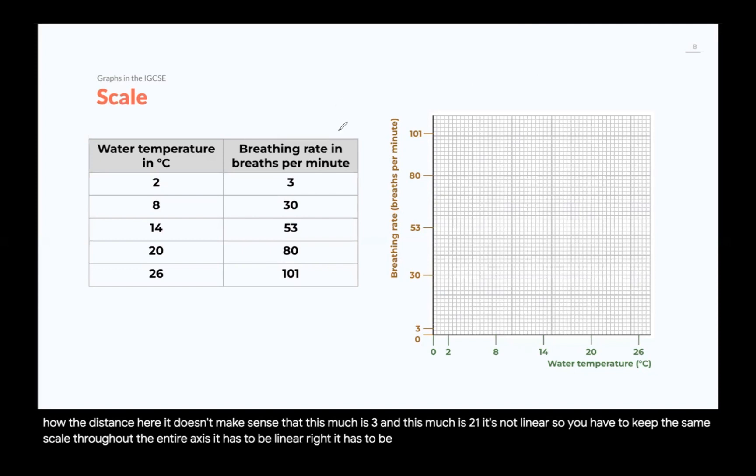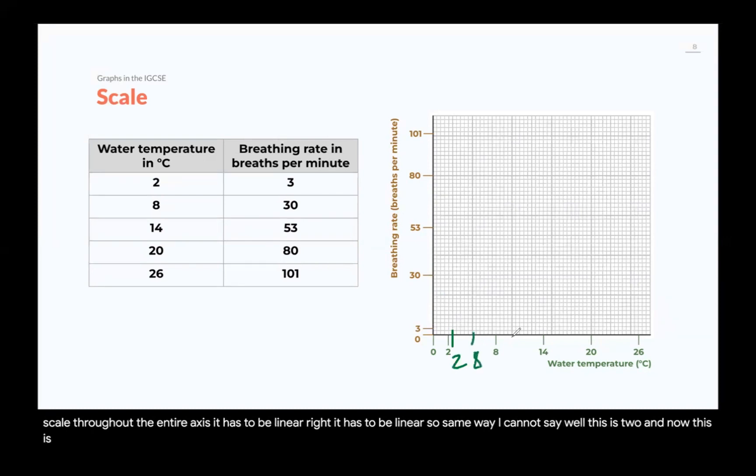You have to keep the same distance. 30, and now this one is 53, and now this is 80, and now this is 101. Well, you see how the distance here, it doesn't make sense that this much is three, and this much is 21. It's not linear. So, you have to keep the same scale throughout the entire axis. It has to be linear, right? It has to be linear. So, the same way, I cannot say, well, this is two, and now this is eight, and now this is 26. It doesn't work like that. You have to keep it linear and readable.